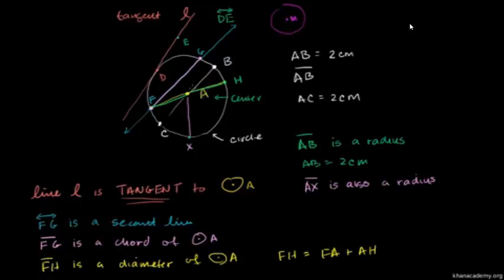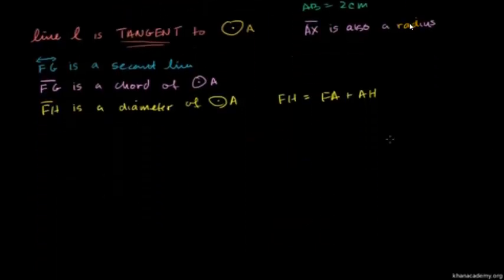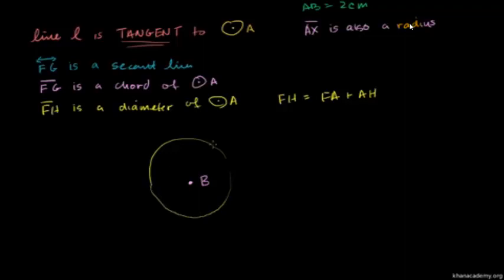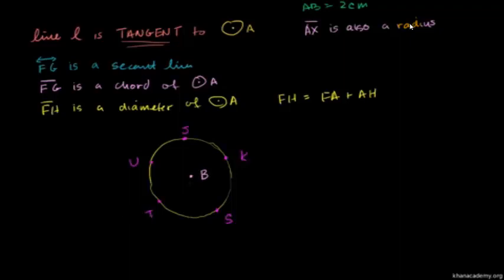Now there's one last thing I want to talk about when dealing with circles, and that's the idea of an arc — the parts of the circle itself. So let me draw another circle centered at B. I'm going to find all the points a given distance from B, so it has some radius. Let me pick some random points on this circle: let's call them J, K, S, T, and U. Now, one interesting thing is what do you call the length of the circle that goes between two points?